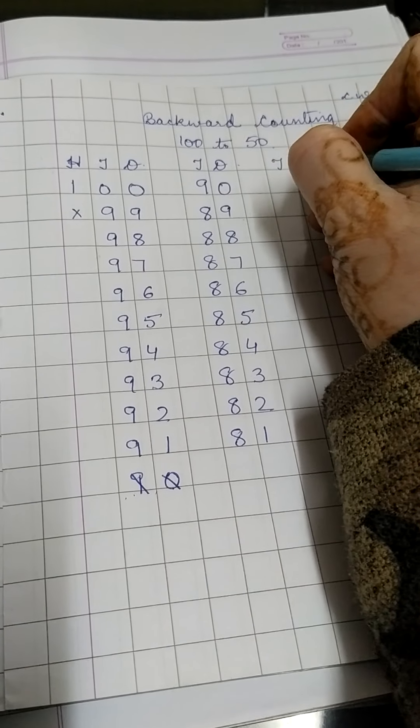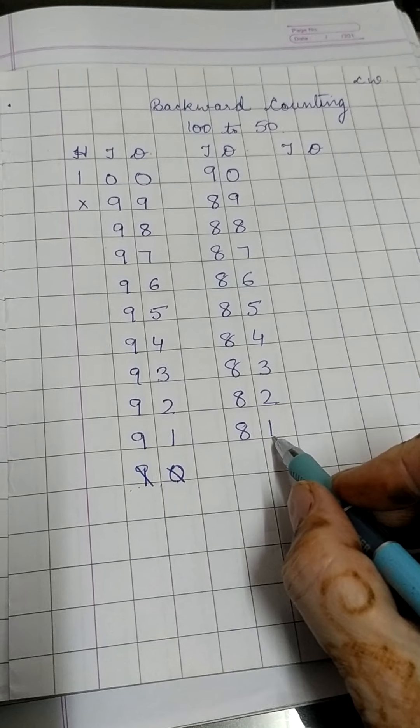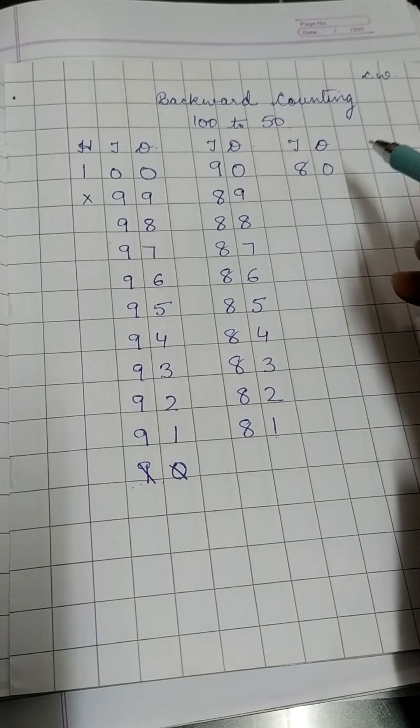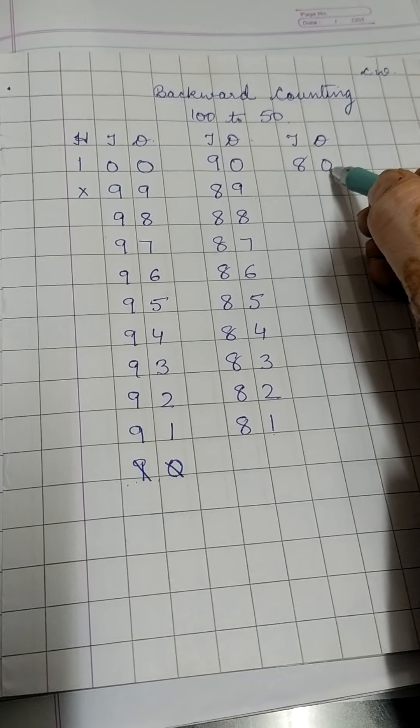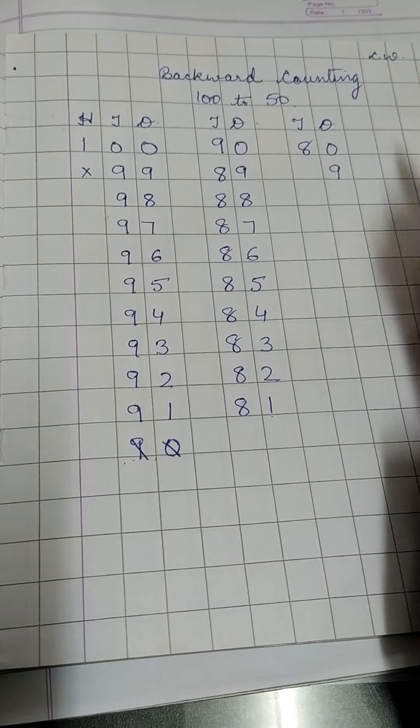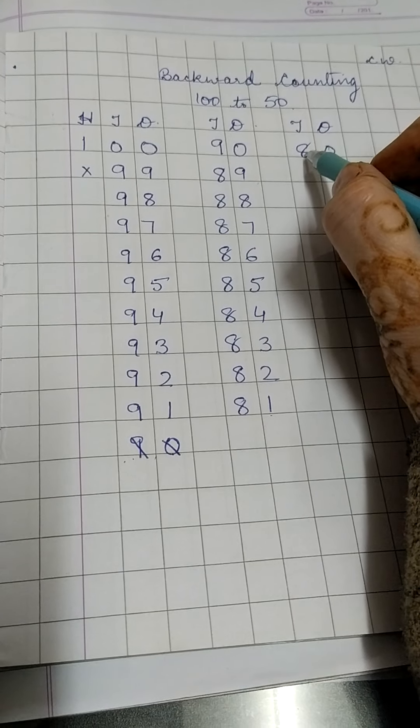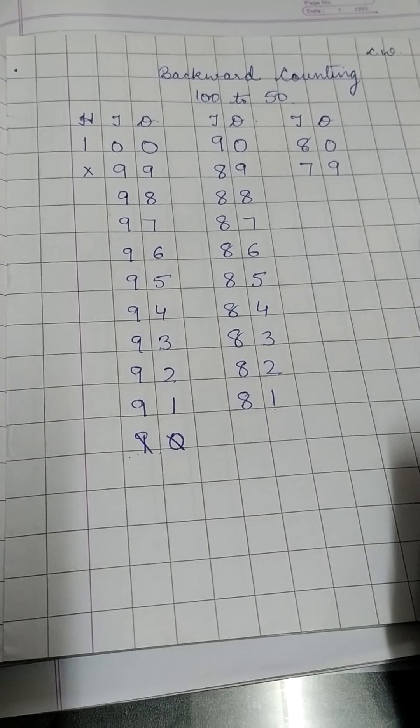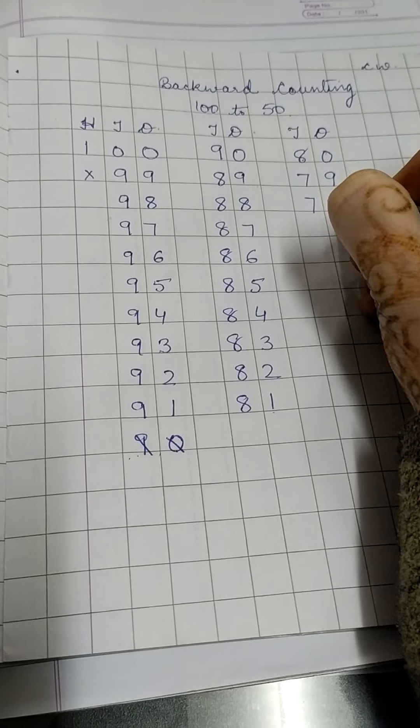Now after 81, next line is again tens ones. It is 1 here. So before 1 it is 0 and 8. 80. Now before 80, again there is 0 in the ones place. So 9 will come in the ones place. And we will subtract 1 number from 8. What comes before 8? It is 7. So now the line will be of 79.